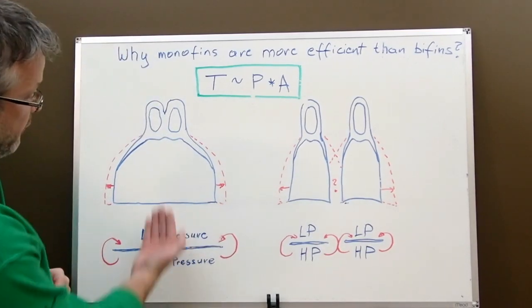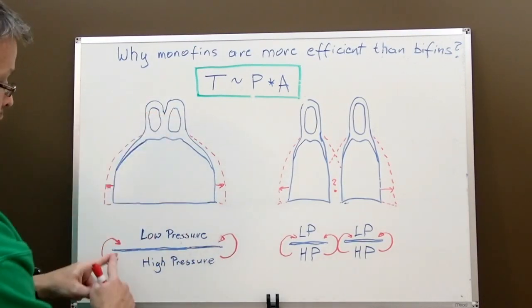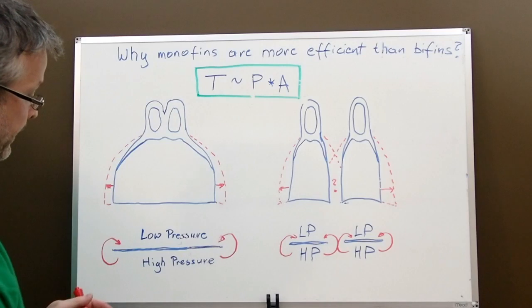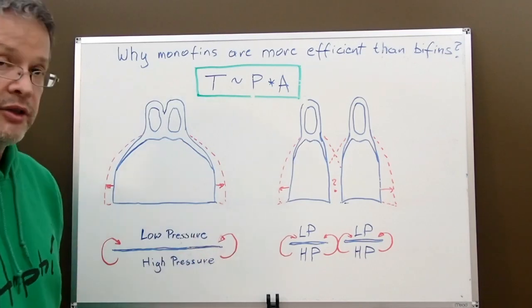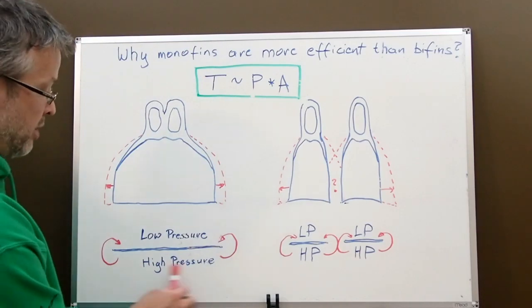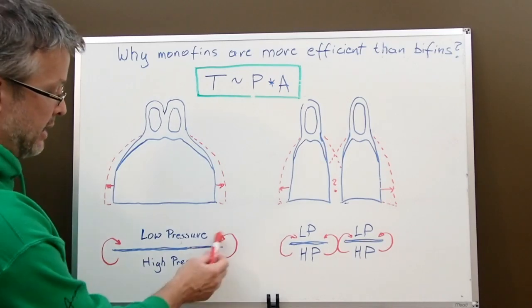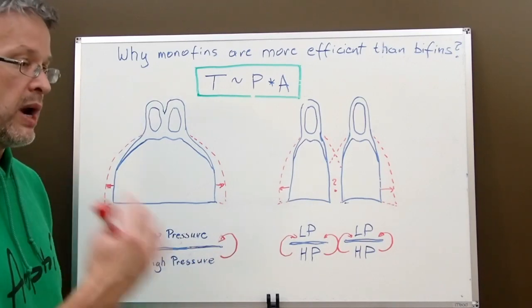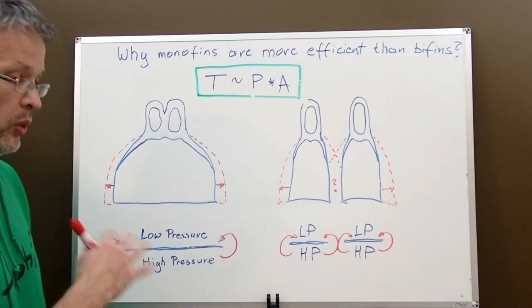When we look at the fin from this side, so we flip it like this and we look from this side, here is the line which represents the front side of the fin. We can imagine that we have high pressure at the bottom and low pressure at the top, and can be reversed of course depending on the cycle of the fin. But let's assume high pressure here, low pressure here. What happens at the edges, and it happens at any fin, any wing, any foil for that matter, it's always the same.